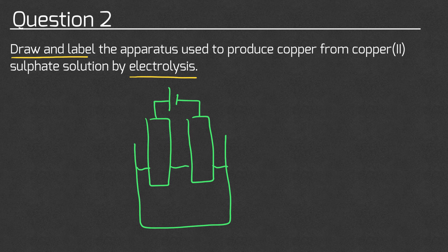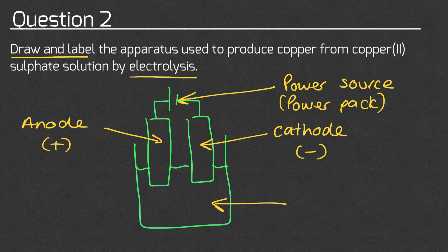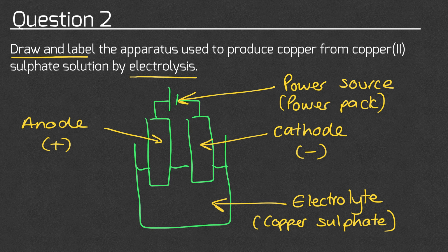We now need to label all of the key features. We have the anode and the cathode — it doesn't matter which way around you label these electrodes. We then have a power source, which in a school lab will commonly be a power pack. And then we have our electrolyte, which in this case will be copper sulfate, because that's what the question tells us we are using. So we now have a labelled diagram for the apparatus used to produce copper from copper-2-sulfate solution.